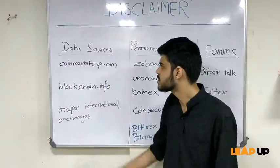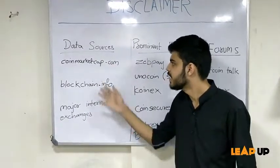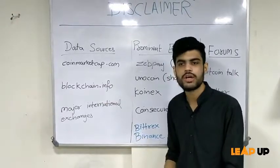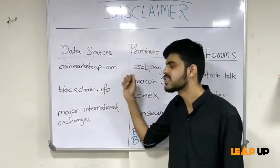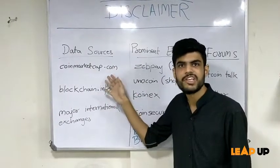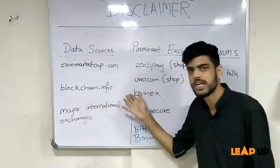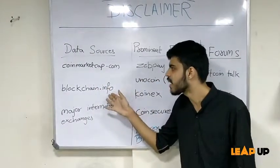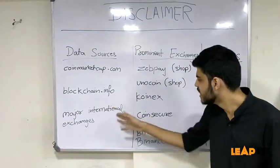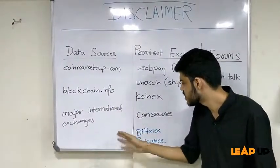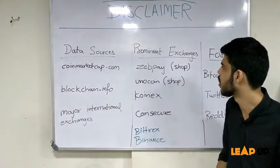Firstly, data sources include coinmarketcap.com, which is essentially a detailed list of all cryptocurrencies listed on different exchanges. This tells about the live prices arranged in order of the volume of trade. Blockchain.info helps you to track the live mining process of all these cryptocurrencies, and other major international exchanges tell about all the technical values of all these cryptocurrencies.